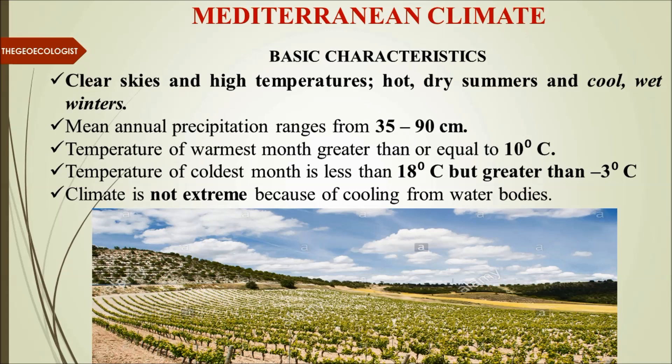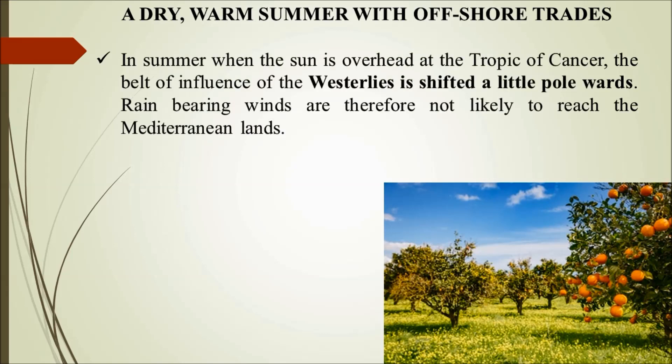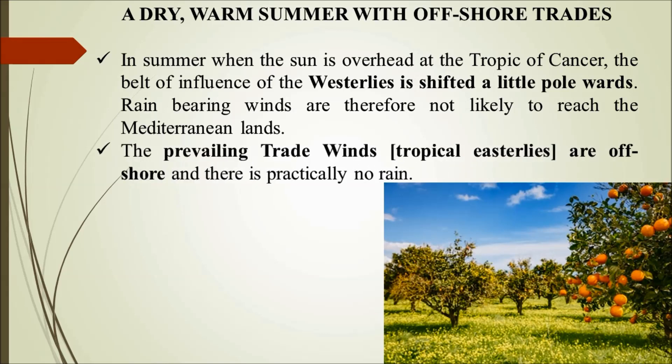A dry warm summer with offshore trades is one major characteristic. In summer, when the sun is overhead — especially on the Tropic of Cancer — westerlies shift a little towards the pole. As a result, rain-bearing winds are not likely to reach Mediterranean lands. The prevailing trade winds that is tropical easterlies are offshore, and there is practically no rain, so summers have completely dry conditions. Strong winds from inland desert conditions also pose a risk of wildfires.